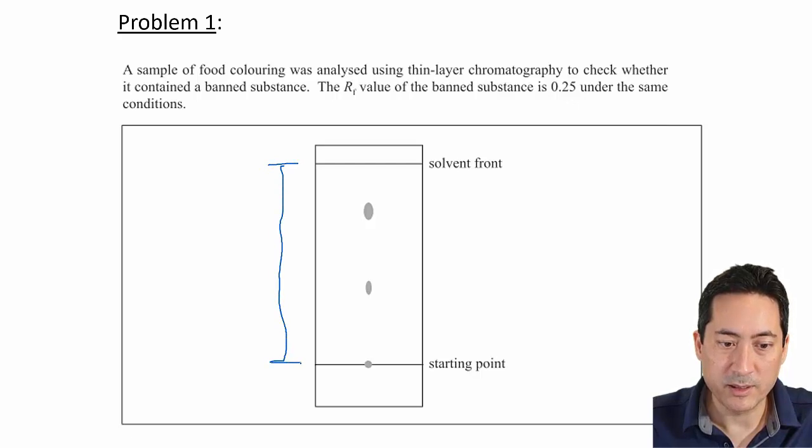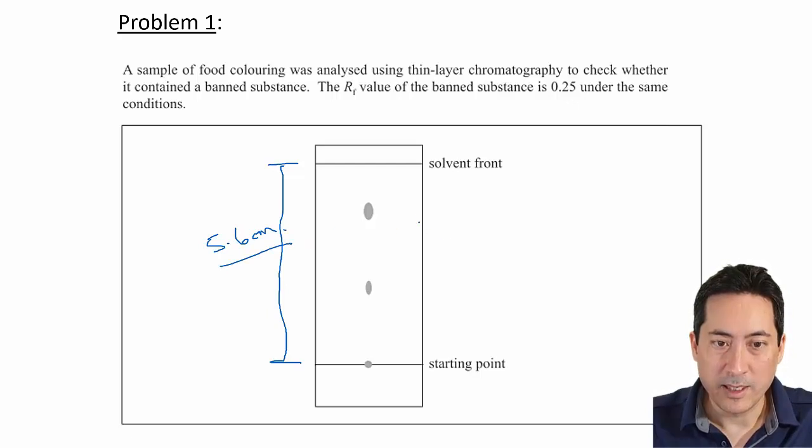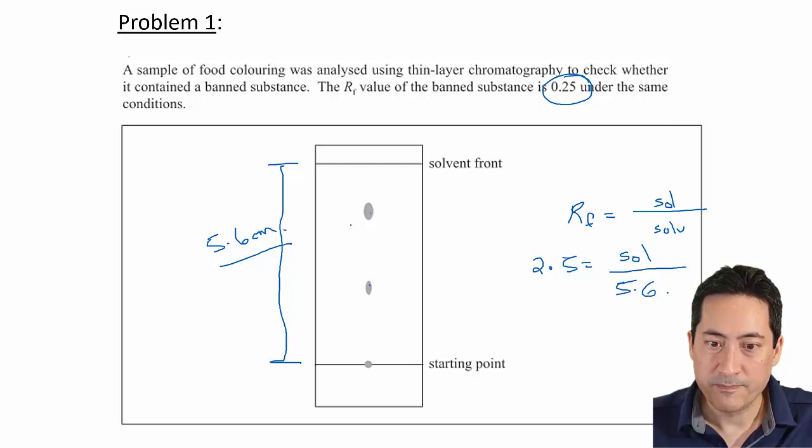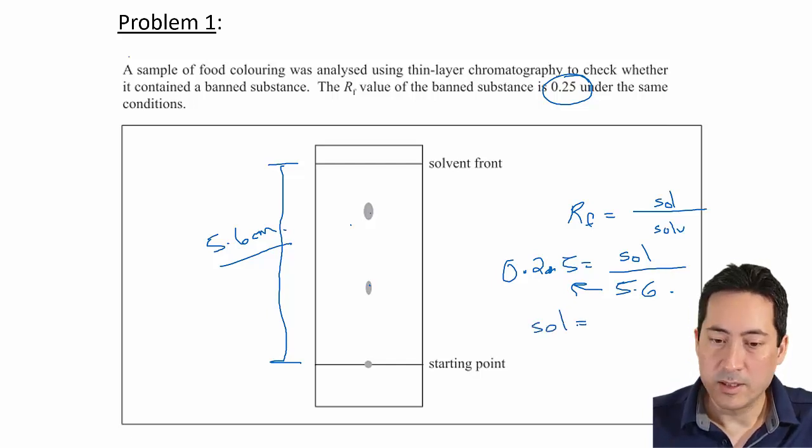I'll just cheat a little. I don't have a ruler here. I know this is 5.6 centimetres. And so we know that the banned substance is 0.25 over here. And just wondering where that would occur on this patient specimen, whether it would be this dot or this dot. So the RF is the solute divided by the distance moved by the solvent. So we know the substance we want is 0.25. We just don't know where this one's meant to be. And this one here is 5.6 centimetres. So if we times that out, we should get the solute should have moved up 0.25 times 5.6.